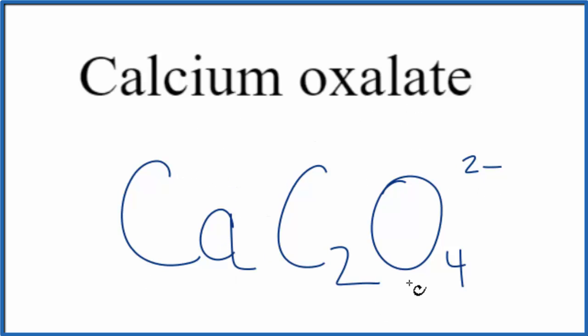We have this metal here and a group of nonmetals. That makes this an ionic compound. For an ionic compound we need to make sure the charge adds up to zero. Calcium is in group two on the periodic table, so it has a two plus ionic charge. The whole oxalate ion is two minus.